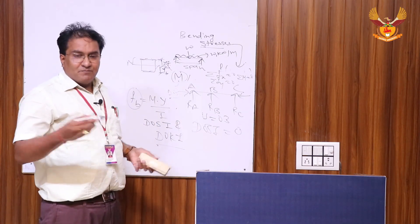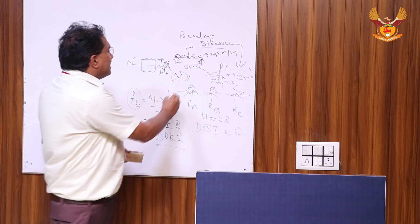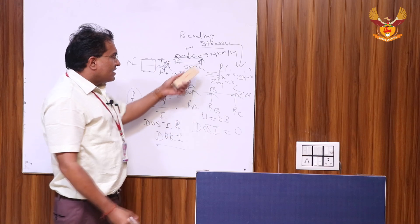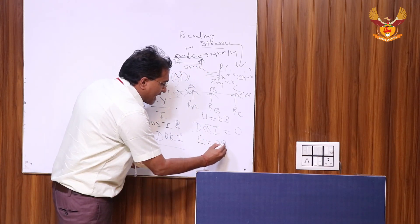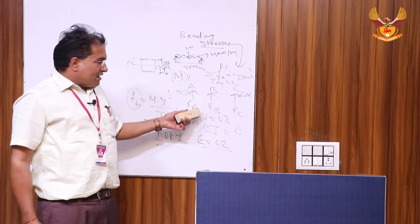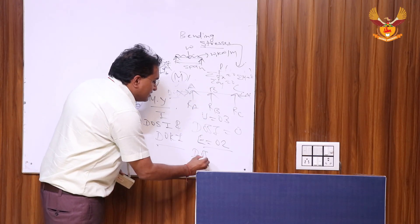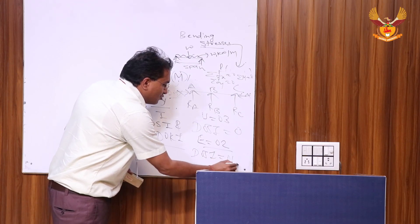But in most of the cases we neglect the axial deformations and horizontal reactions, and we consider the equations of equilibrium as 2. So we have three unknowns with two equations. Then in this case, DOSI is equal to 1.